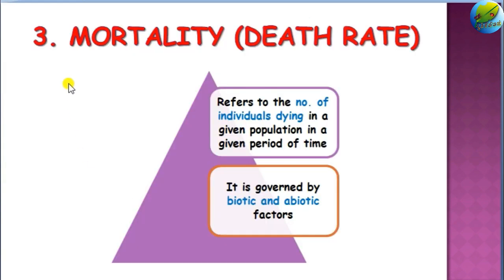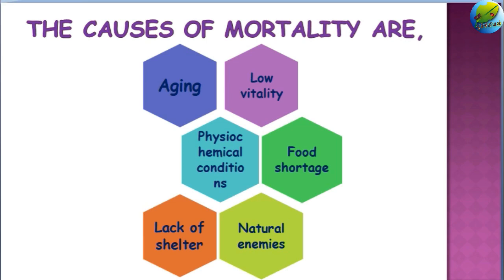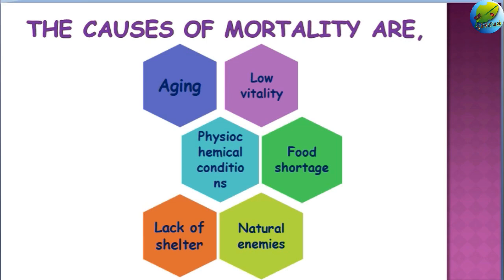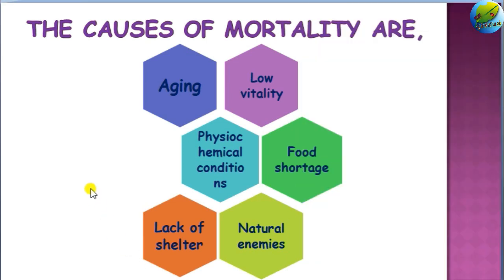Mortality or death rate refers to the number of individuals dying in a given population in a given period of time. It is governed by both biotic and abiotic factors. There are various causes for mortality — it may be due to aging, low vitality, or nutrient and food shortage in a particular area, or it may be caused by natural enemies present in the locality.